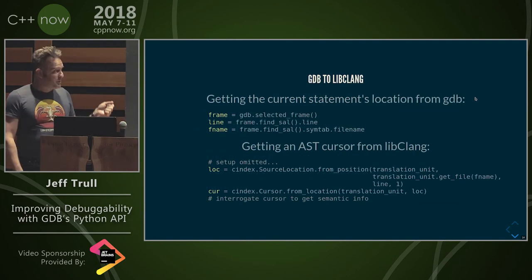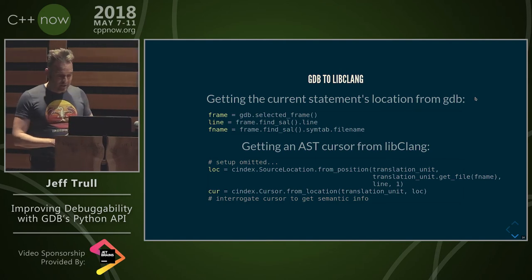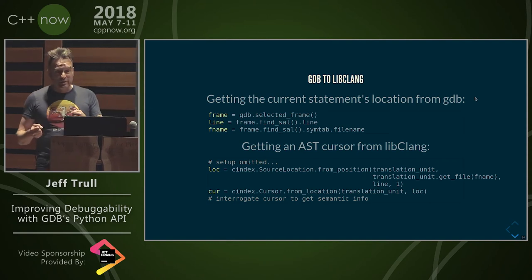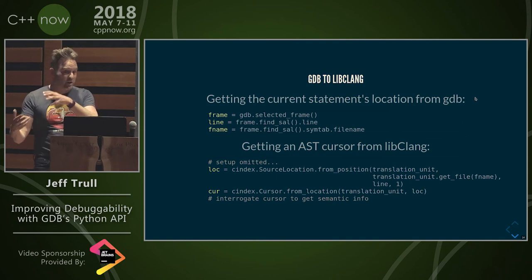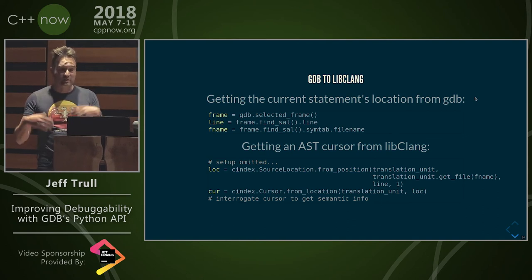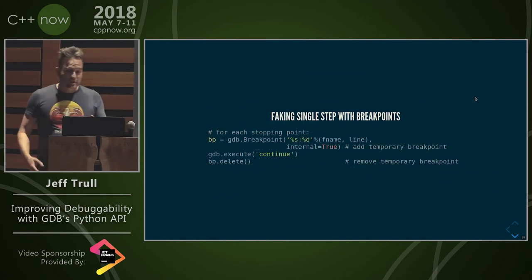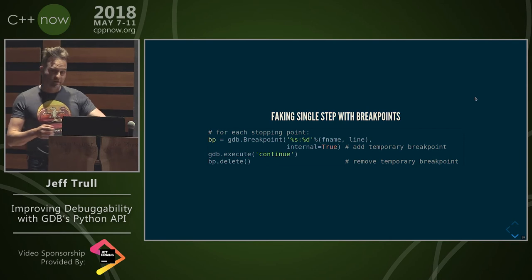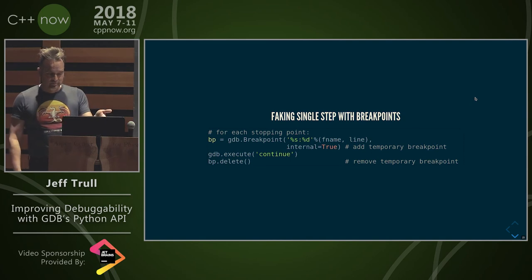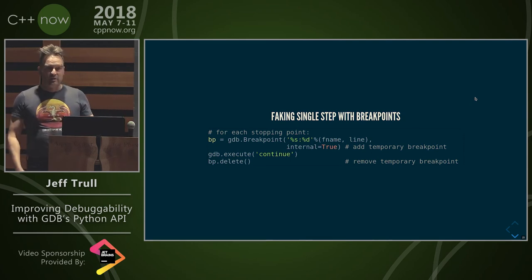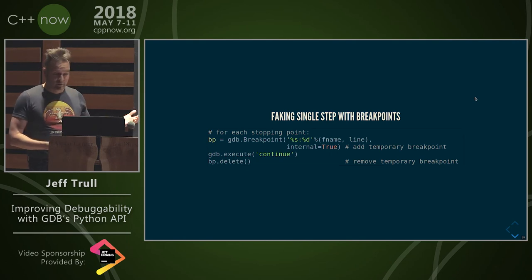GDB can give us the current file and line number. We can then go over to libclang, take that information, and get a cursor into the AST. We can interrogate that cursor to find out what's happening semantically at the point we're stopped in GDB. Once we've used that information to compile our list of files and lines to set breakpoints at, we use GDB methods to create breakpoints, execute the continue, and then delete the breakpoints afterwards.